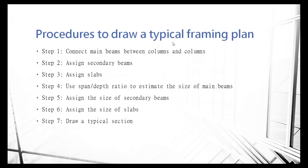This is a simple step to draw a framing plan. First of all, you need to understand that mostly the main beam is connected from columns to columns, and then outside are the secondary beams. Then outside is the slab. Use the span-depth ratio to estimate the main beam size, secondary beam size, and the size of the slab.